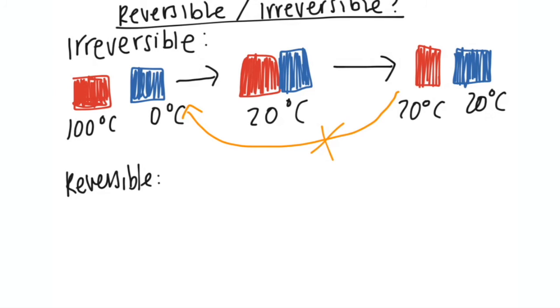So we call that irreversible. It can't just, on its own, go back to how it was originally. I think that's a pretty fair example. And then for reversible, it means opposite. It means, yes, I can go back to what I was originally.